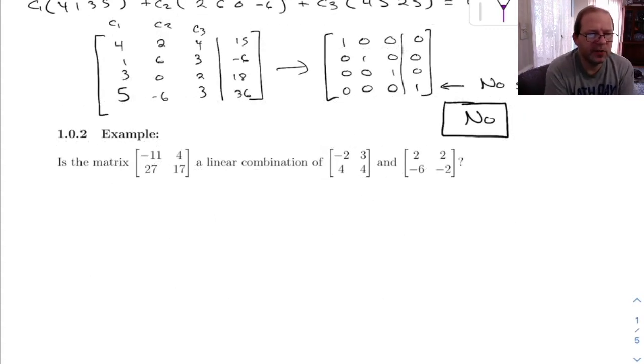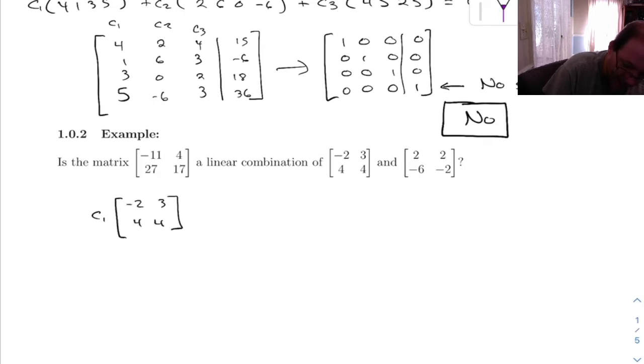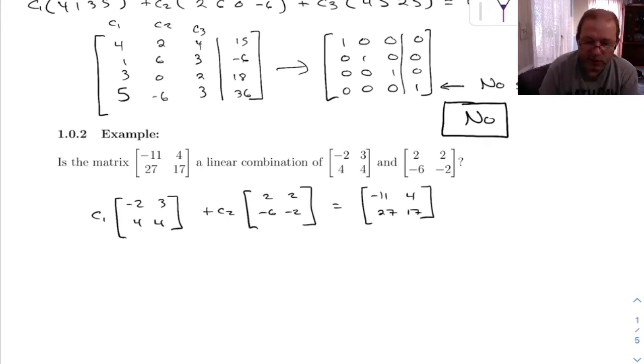Example 1.02 says, is this matrix a linear combination of these two? So to set this up, you would say C1 times (-2, 3, 4, 4) plus C2 times (2, 2, -6, -2) equals (-11, 4, 27, 17).